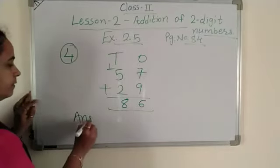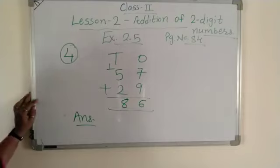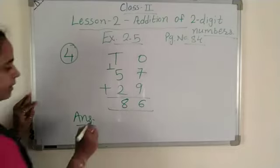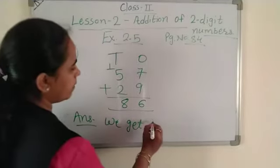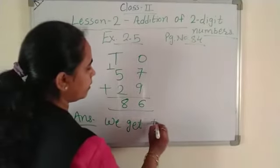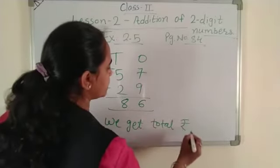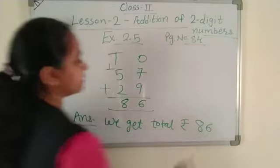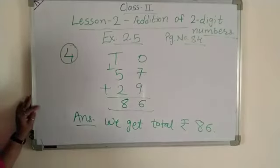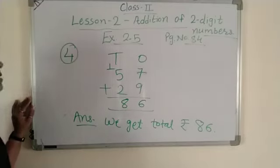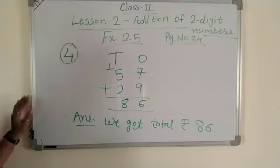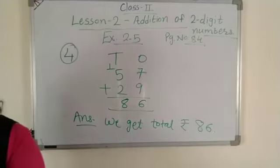Write the answer: What is the total we get? We get total rupees 86. This is number 4. In word problems, you have to read properly, then understand what we need to do. Number 4 is complete.